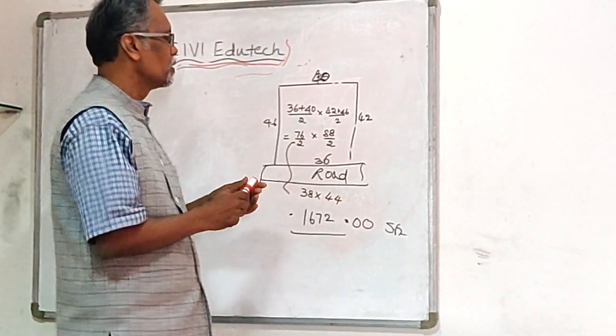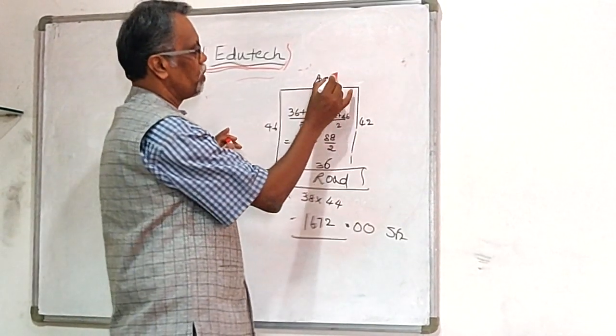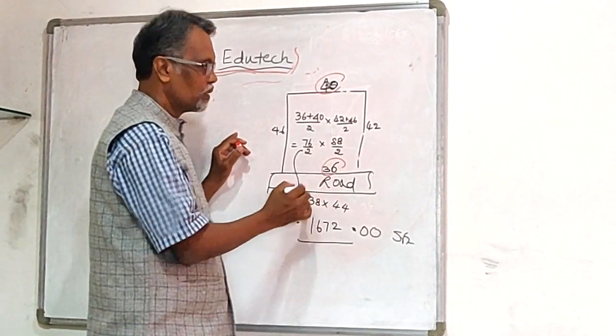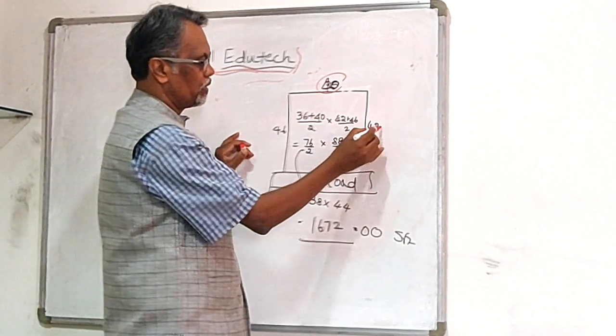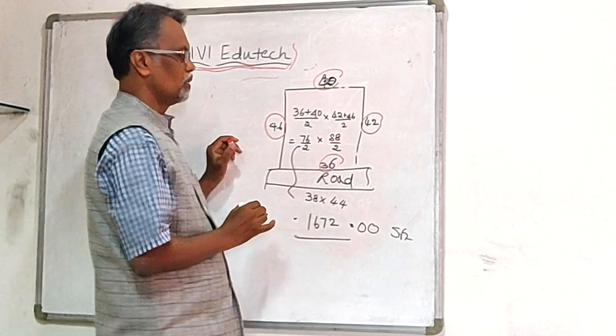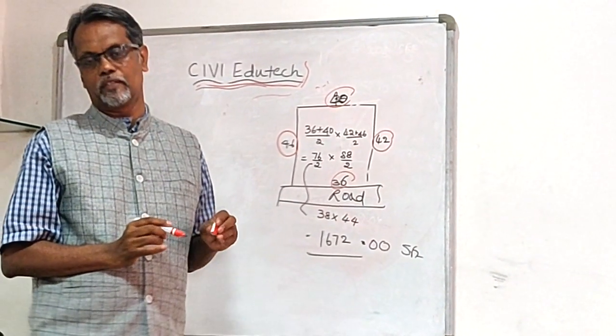This is a site wherein we know this is 40 foot and this is 36 foot - there is a difference - and this is 42 foot and this is 46 foot. We know all the sides, then we have to calculate the area.